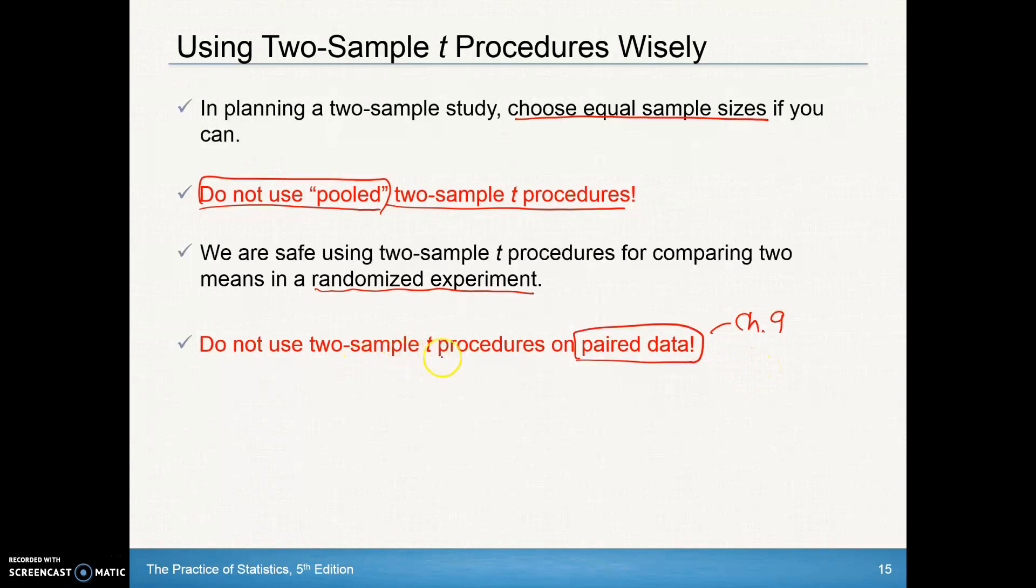Don't do two-sample t procedures when you can use paired data. Remember, we had one list with all the data here and a second list with all the data, then we found the difference between those two lists. If you can do that, that's a lot better than doing two-sample t procedures.